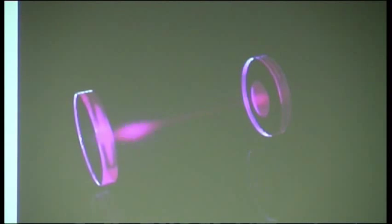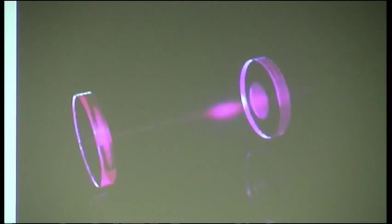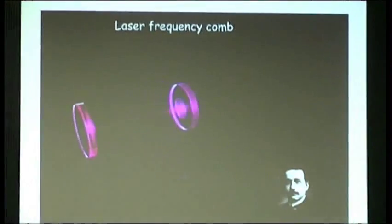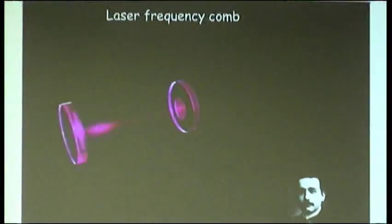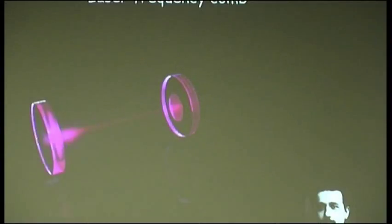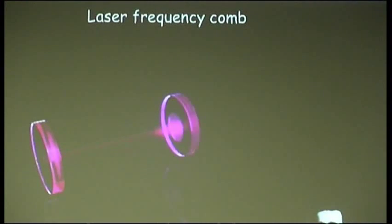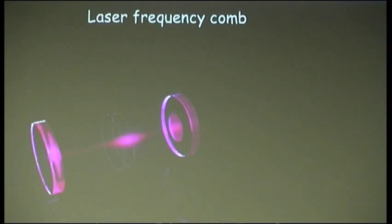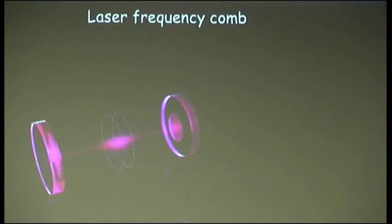Such a laser consists of a cavity with two mirrors, and you have a short flash of light bouncing back and forth. In that respect, it's similar to the Gedanken light clock of Einstein to explain special relativity — except we are talking about a laser, so there is an amplifying medium, and you can keep this going even though you couple out a train of femtosecond pulses.